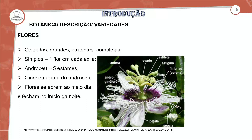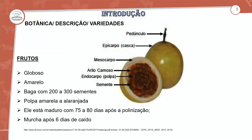Isso garante uma qualidade da obtenção do produto final, que é o fruto. O fruto tem morfologia globosa, cor amarela dependendo da variedade — estou falando da polpa. Algumas variedades não têm casca amarela necessariamente para estar pronta para colheita. A baga pode apresentar de 200 a 300 sementes. A polpa tem coloração amarela ou alaranjada e o fruto está maduro com 70 a 80 dias após a polinização.